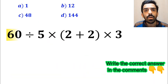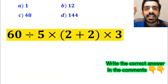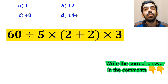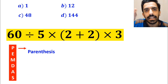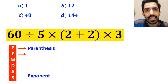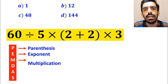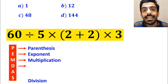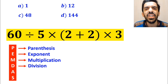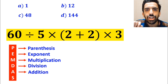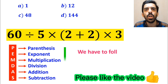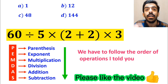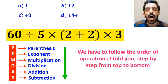Now let me explain step-by-step how to solve this expression properly. To solve this problem, we must follow a rule that is called PEMDAS. In this rule, P stands for parenthesis, E stands for exponent, M stands for multiplication, D stands for division, A stands for addition, and S stands for subtraction.